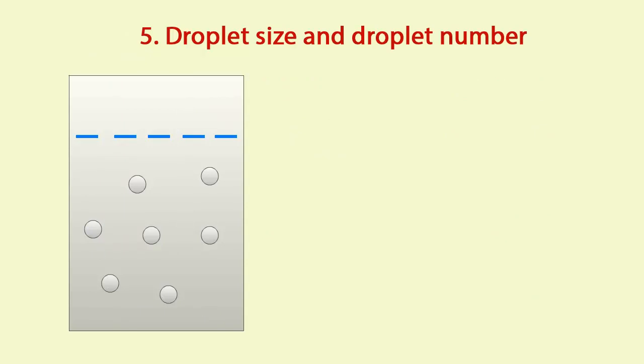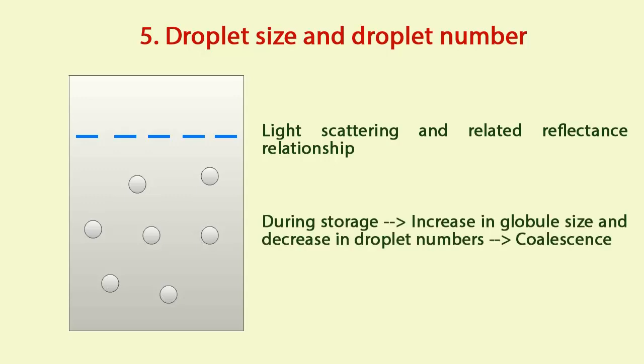Droplet size and droplet number. It is determined by light scattering and related reflectance relationship. During storage, if droplet size increases and droplet number decreases, it indicates that the coalescence of oil globules has been started and instability in emulsion is indicated.